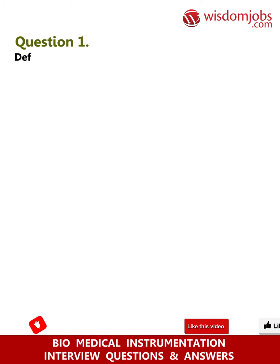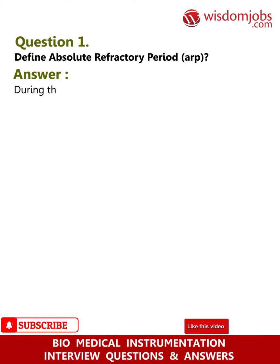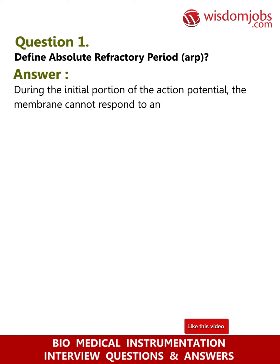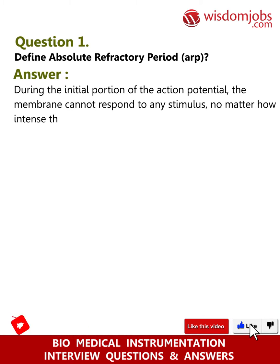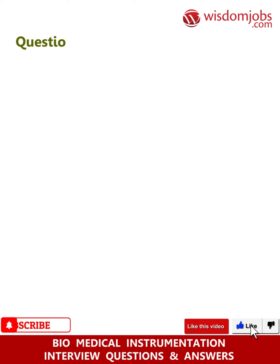Question 1: Define absolute refractory period. Answer: During the initial portion of the action potential, the membrane cannot respond to any stimulus, no matter how intense the stimulus is. This interval is called the absolute refractory period (ARP).